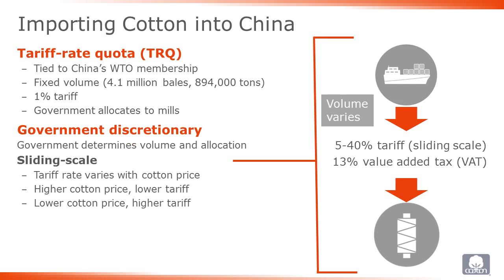As the name suggests, the tariff rate for sliding scale quota varies. Sliding scale tariff rates are a function of import prices, and were designed to insulate growers in low-price environments, reaching levels as high as 40% when the value of imported cotton is low. They are also designed to help mills in high-price environments, dropping as low as 5% when the cost of imported cotton is high. At current market prices around 90 cents per pound, the sliding scale tariff is around 10%.